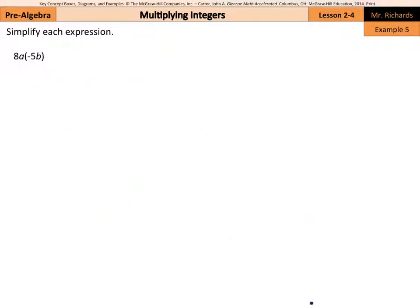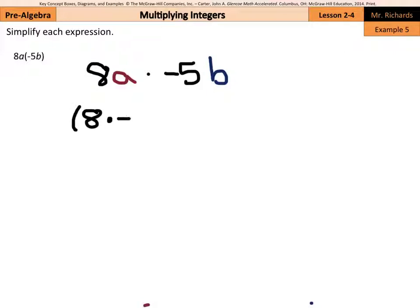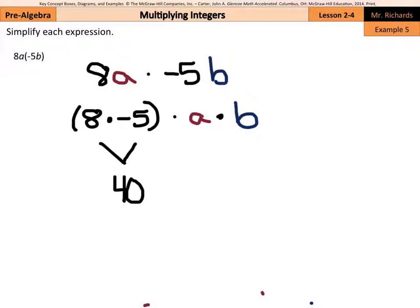What happens when we're multiplying with coefficients and variables? We have 8a multiplied by negative 5b. We can regroup this so that we have the integers together — 8 times negative 5 — and the variables together — a times b. Well, 8 times 5 is 40, but a positive times a negative is negative. And a times b is just ab. So negative 40ab is our solution.